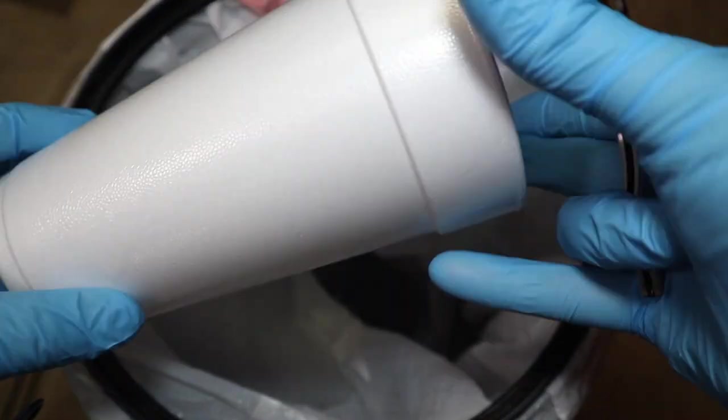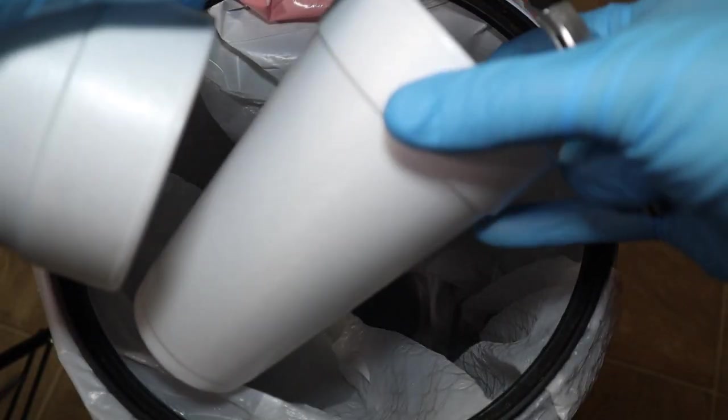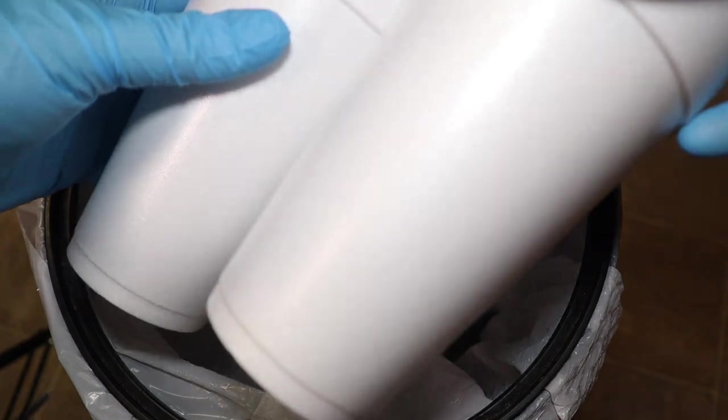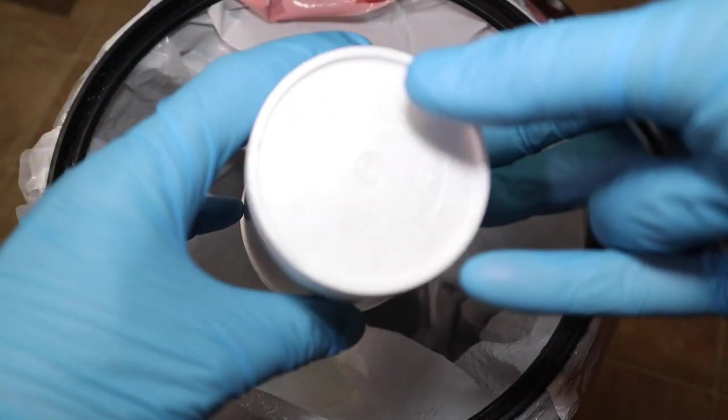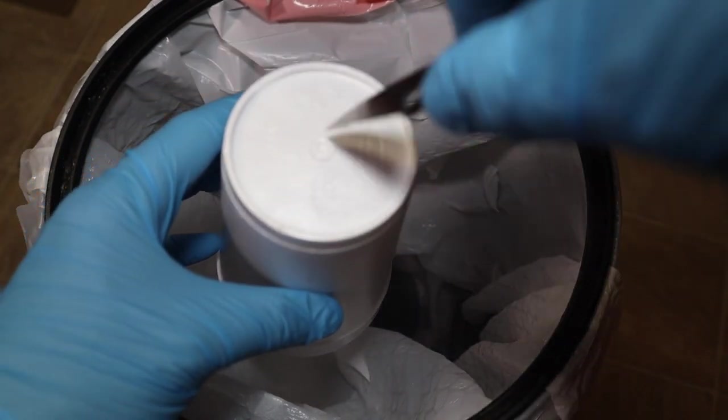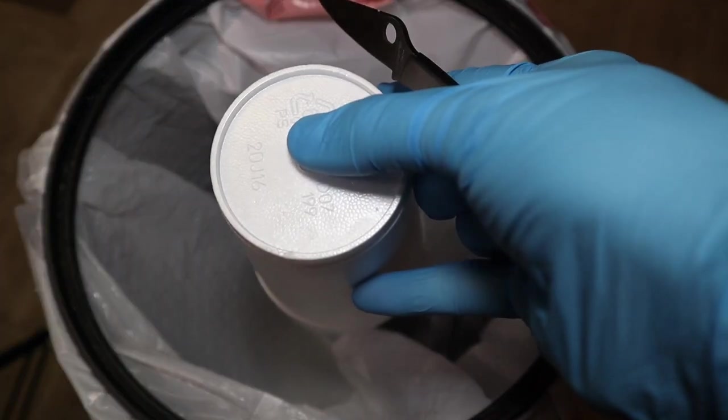So I start with a styrofoam cup and you want one that's got a rim. So when this fits into it you can see that gives a little bit of an offset for the nutrients. So you can bottom water these. So what I do is cut out three corners off the bottom and then I twist a center hole out for the wick.